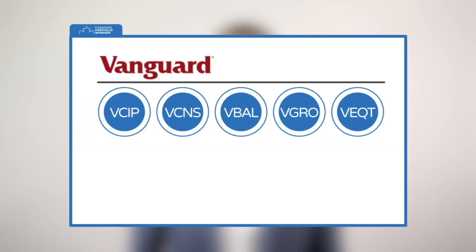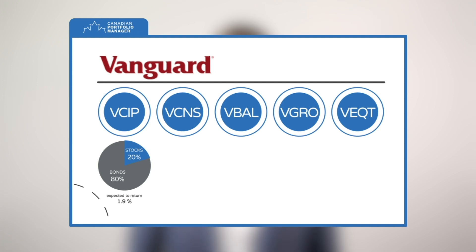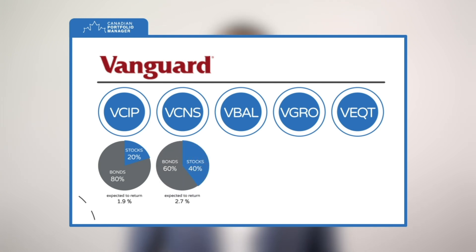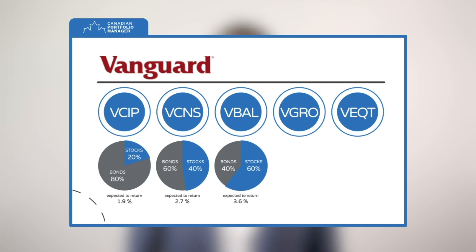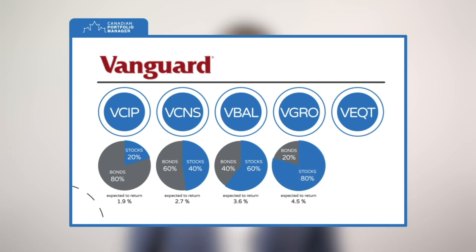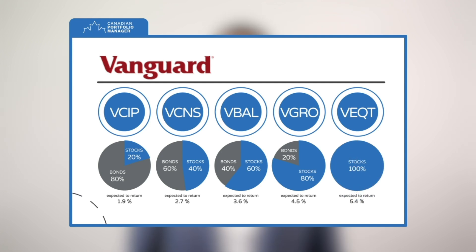VCIP, which has an 80% bond, 20% equity asset mix, is expected to return 1.9%. VCNS, which has a 60% bond, 40% equity asset mix, is expected to return 2.7%. VBAL, which has a 40% bond, 60% equity asset mix, is expected to return 3.6%. VEQT, which has a 100% equity asset mix, is expected to return 5.4%.